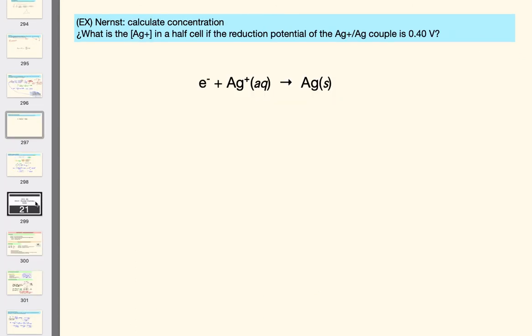One final question. What is the silver ion concentration in a half cell if the reduction potential of the silver ion-silver couple is 0.40 volts? So, what do we know? What are we asked about? We're asked for a concentration, and we're given a potential. Well, as usual, what's the equation that normally relates those two? Again, it's the Nernst equation.